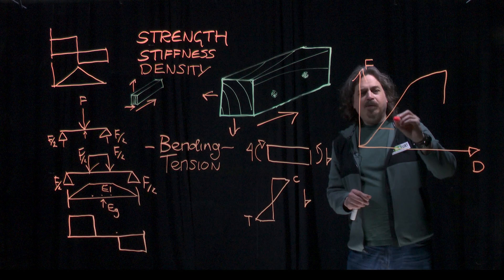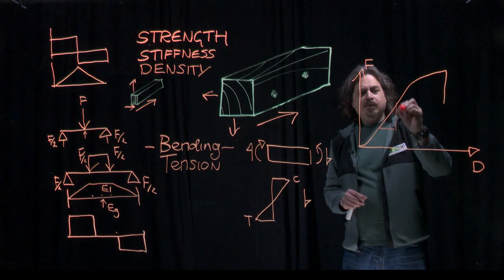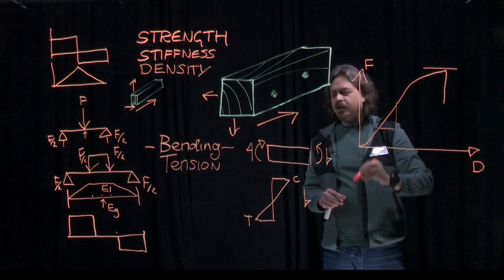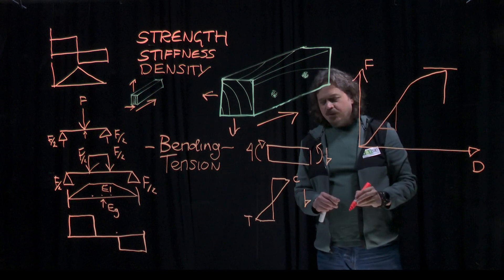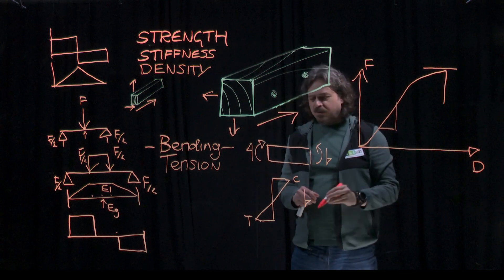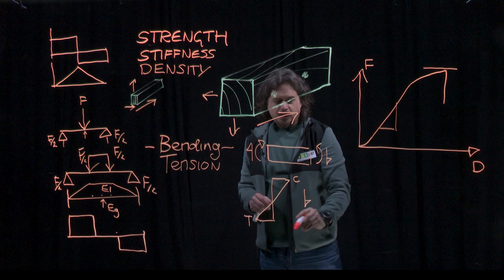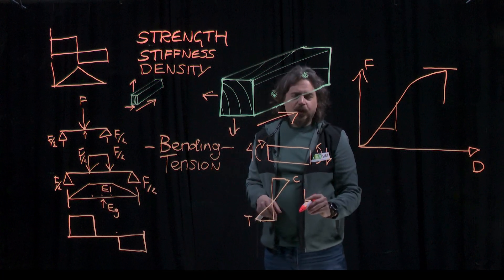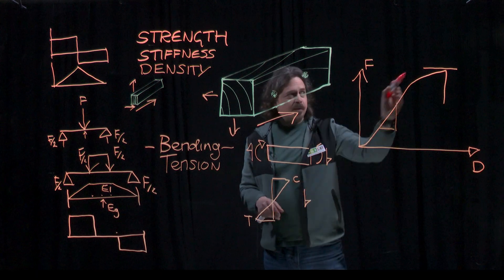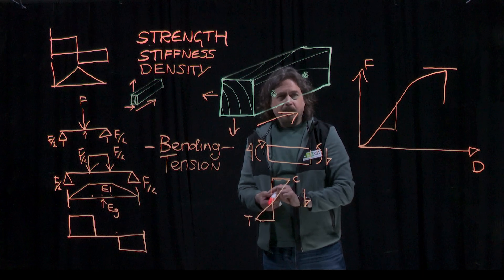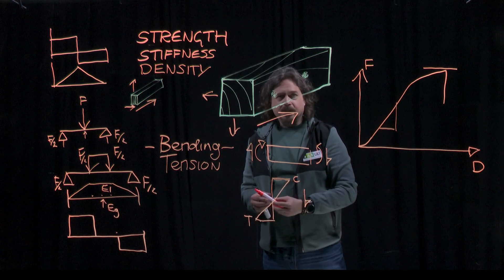So the slope of this line here is describing the stiffness value. And this point here, the maximum force reached, is our measure of strength. Now, built into this measurement of strength is an assumption that the wood is following this kind of stress distribution. It's a simplification of reality. But what we're doing is we're calculating the maximum stress at the extreme fiber. And that's our bending strength by the definition of the standards.